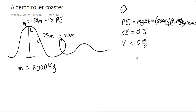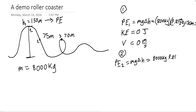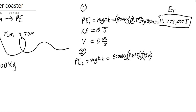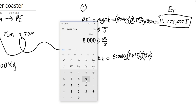Now let's look at position 2. The potential energy at 2 is just equal to mgΔH again. In this case, our change in height is from zero to 75 meters, so it's going to be: 8,000 kilograms times 9.81 meters per second squared, and the height is 75 meters. Throwing that into the calculator, we find 8,000 times 9.81 times 75 is going to be 5,886,000.